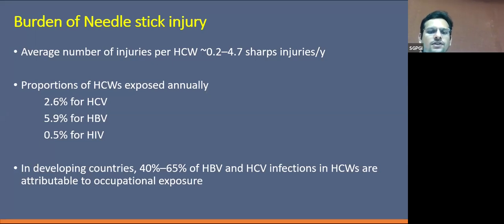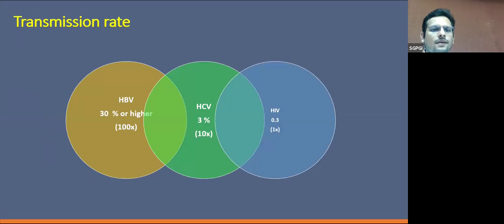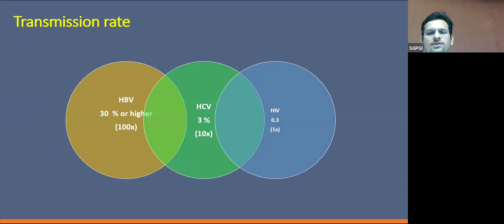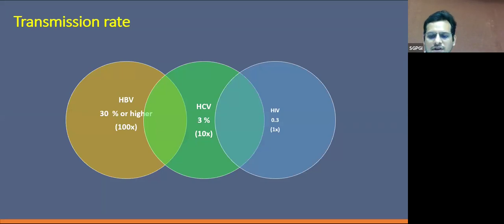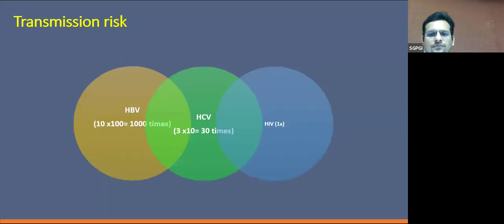In developing countries, around 40 to 65% of viral infections in healthcare workers are due to occupational exposure only. Looking at the transmission rate, the risk of transmission after exposure is 0.3% for HIV, 3% for HCV after a single exposure, and up to 30% for hepatitis B — meaning the transmission rate of HBV is approximately 1000 times higher than HIV.